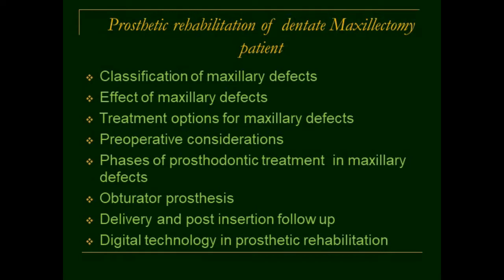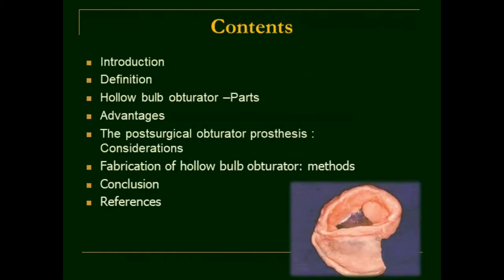Let us see the contents. The contents can include: introduction, the definition, the hollow bulb obturator parts, the advantages, the post-surgical obturator prosthesis general considerations, fabrication of hollow bulb obturator using various methods, and conclusion and references.